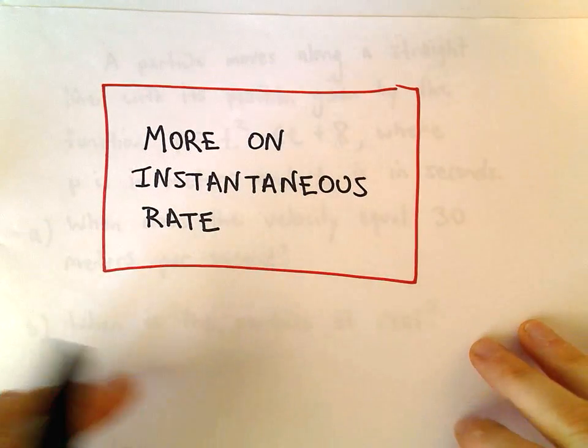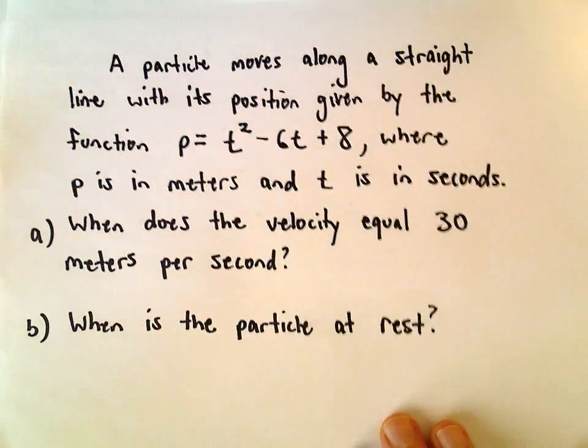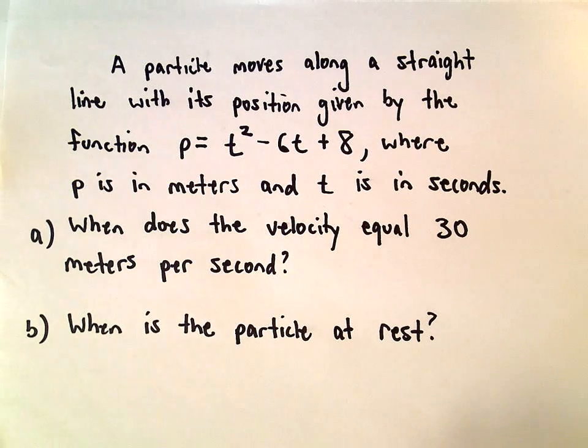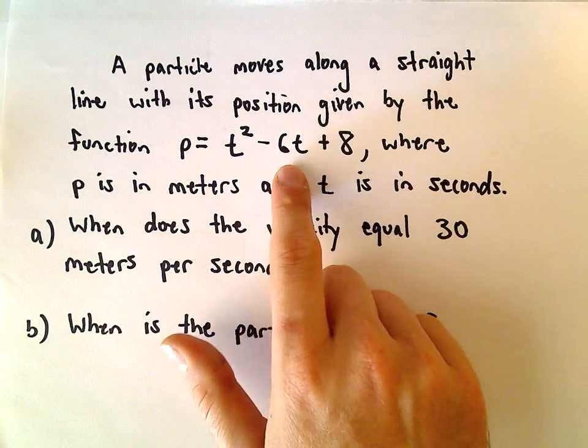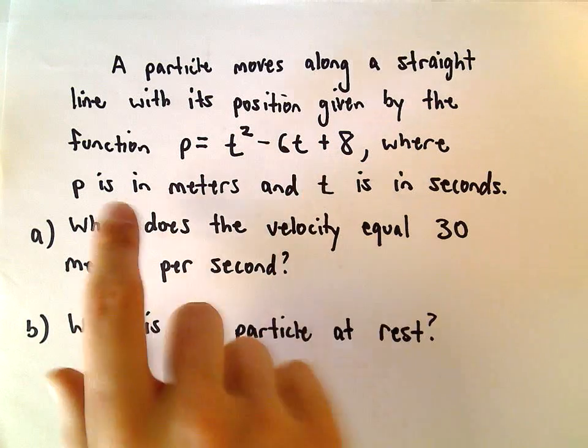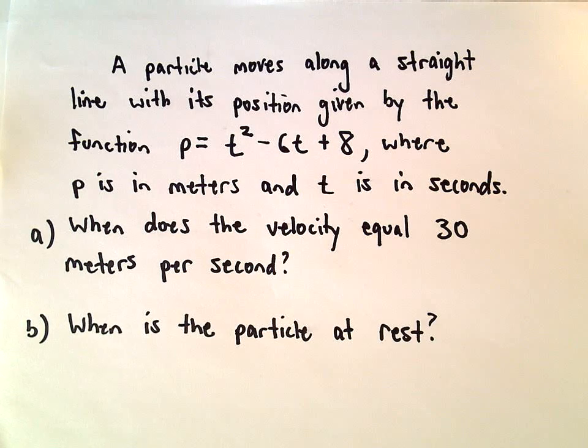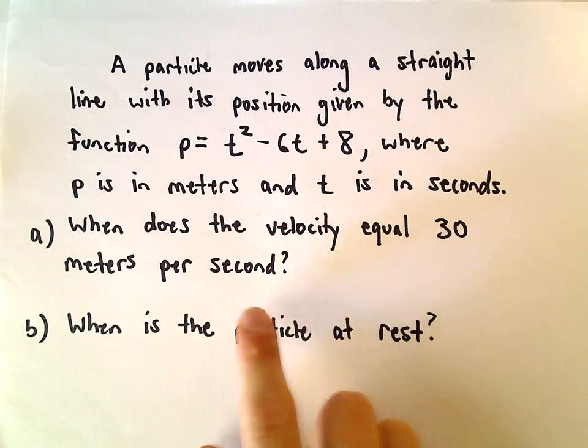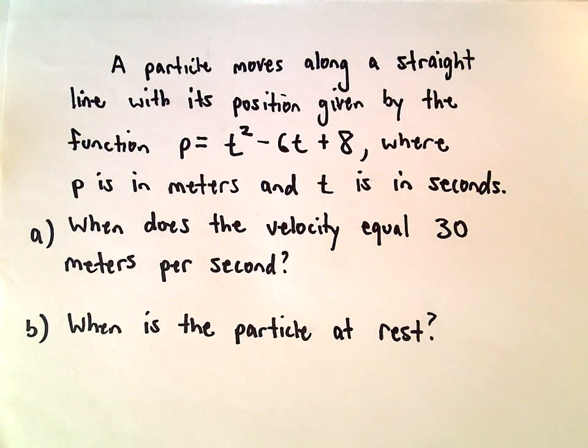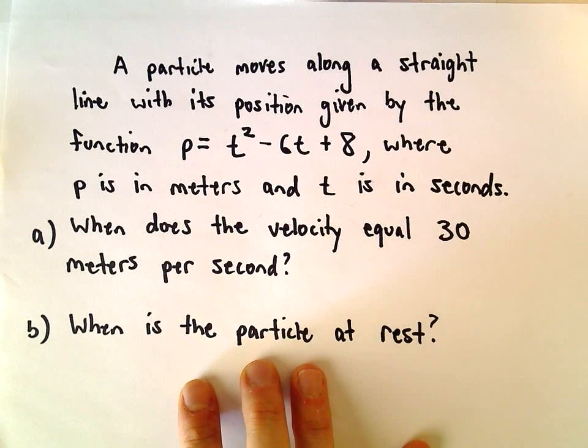Okay, so one more example here on instantaneous rate. We've got a particle that moves along a straight line, and its position is given by the function p equals t squared minus 6t plus 8, where p is in meters and t is in seconds. We want to figure out when the velocity of this particle will equal 30 meters per second, and also we want to know when is the particle at rest.